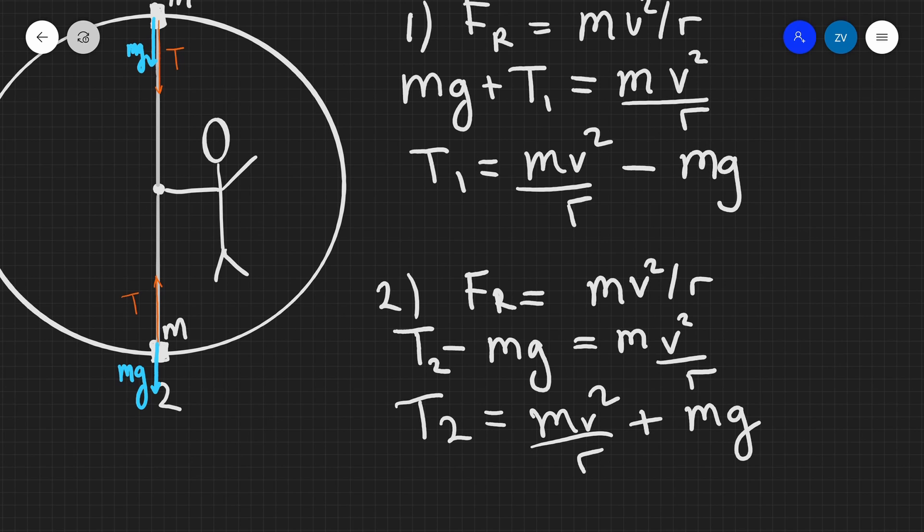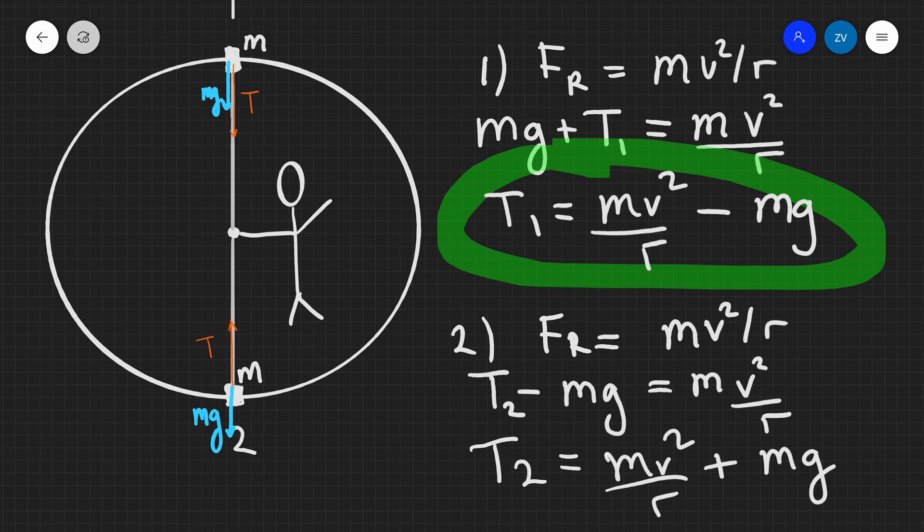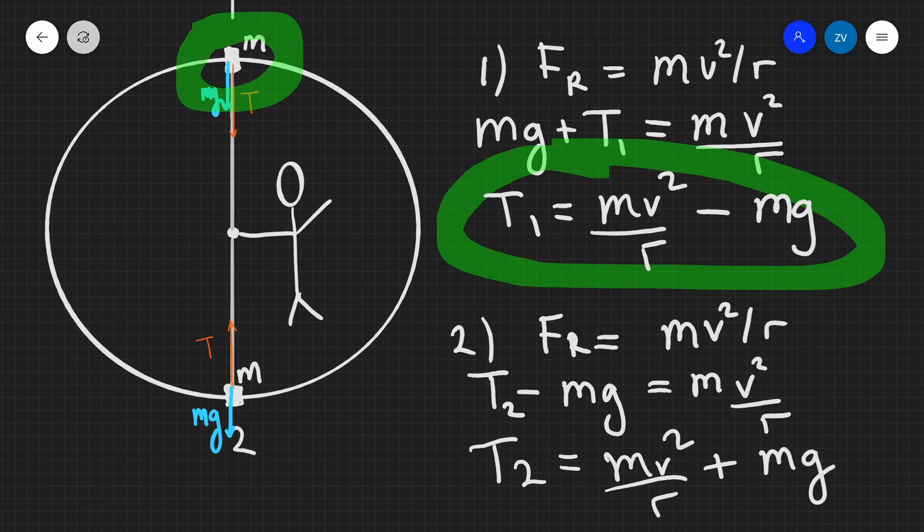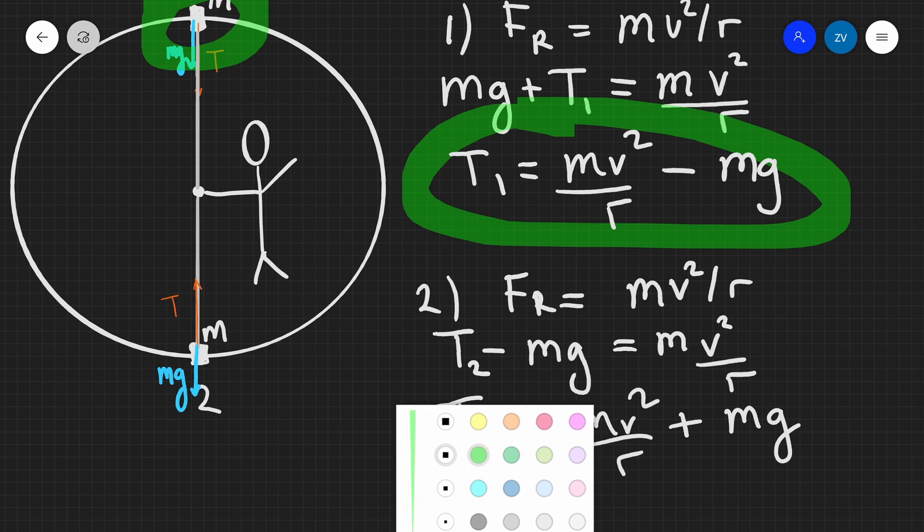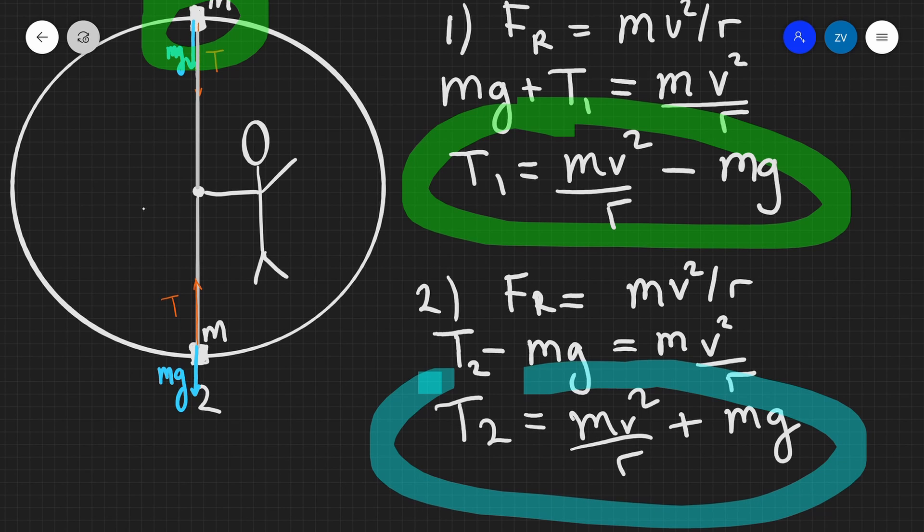Notice something pretty amazing. In position one over here, the tension definitely has to be lower compared to position two. The reason for that is, well, mathematics. We can see how mv squared over r is being added the weight or taken away the weight, which makes the tension a lot greater in position two.